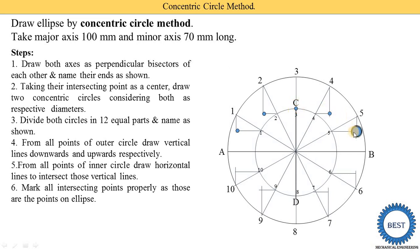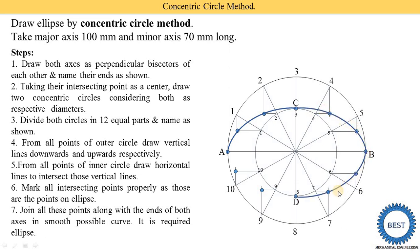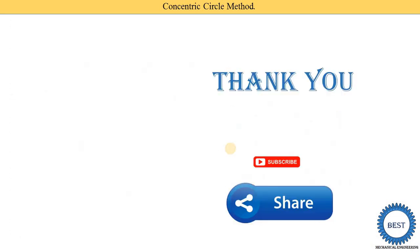Mark all the intersecting points, as these are the points on the ellipse. We achieve twelve points in total. Then join all these points, along with the ends of both axes, using a smooth curve to get the required ellipse. Connect from point A through the intersecting points to end B, and from C through the intersecting points to D, completing the ellipse using the concentric circle method.